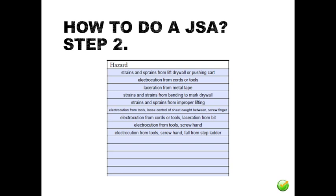Step two: identify the hazard. For each step, identify any hazards that have the potential to cause an incident, injury, environmental impact, or property damage. For instance, the task is to remove the manhole cover; the associated hazards would be strains and sprains from lifting, being crushed by the cover if the lid falls, and falling into the manhole as the cover is being removed.